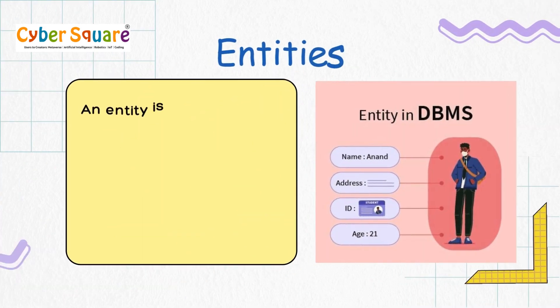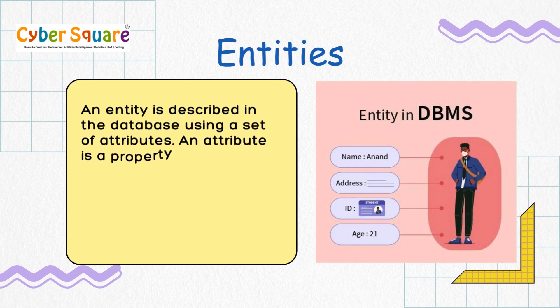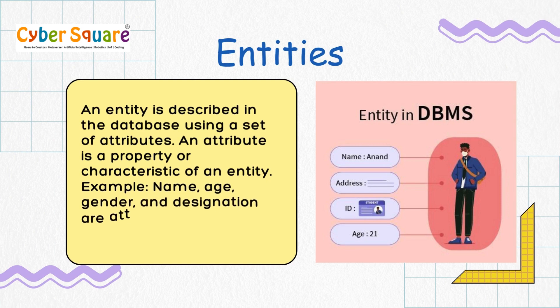An entity is described in the database using a set of attributes. An attribute is a property or characteristic of an entity. For example, Name, Age, and Gender are attributes of an employee.